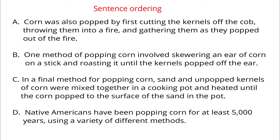Example. A: Corn was also popped by first cutting the kernels off the cob, throwing them into a fire, and gathering them as they popped out of the fire. B: One method of popping corn involved skewering an ear of corn on a stick and roasting it until the kernels popped off the ear. C: In a final method for popping corn, sand and unpopped kernels of corn were mixed together in a cooking pot and heated until the corn popped to the surface of the sand in the pot.